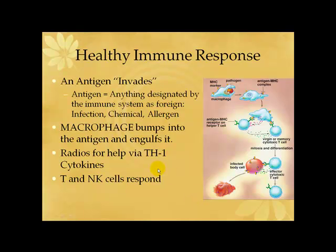Let's look at a healthy immune response. In a normal immune response, an antigen invades. An antigen is anything designated by the immune system as foreign, which could be infection, bacteria, viral, chemicals such as heavy metals, pesticides, or it could be an allergen — the most famous probably being gluten intolerance or wheat intolerance in celiac disease.